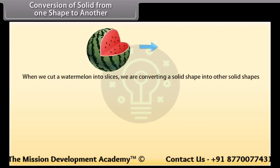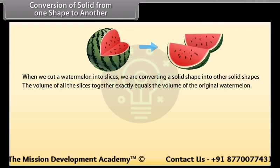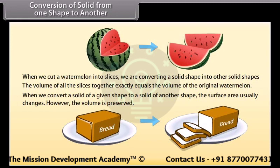When we cut a watermelon into slices, we are converting a solid shape into other solid shapes. Regardless of the size and shape of the slices, the volume of all the slices together exactly equals the volume of the original watermelon. When we convert a solid of a given shape to a solid of another shape, the surface area usually changes; however, the volume is preserved. Similarly, when cutting bread into slices, the volume of all the slices equals the volume of the original object.